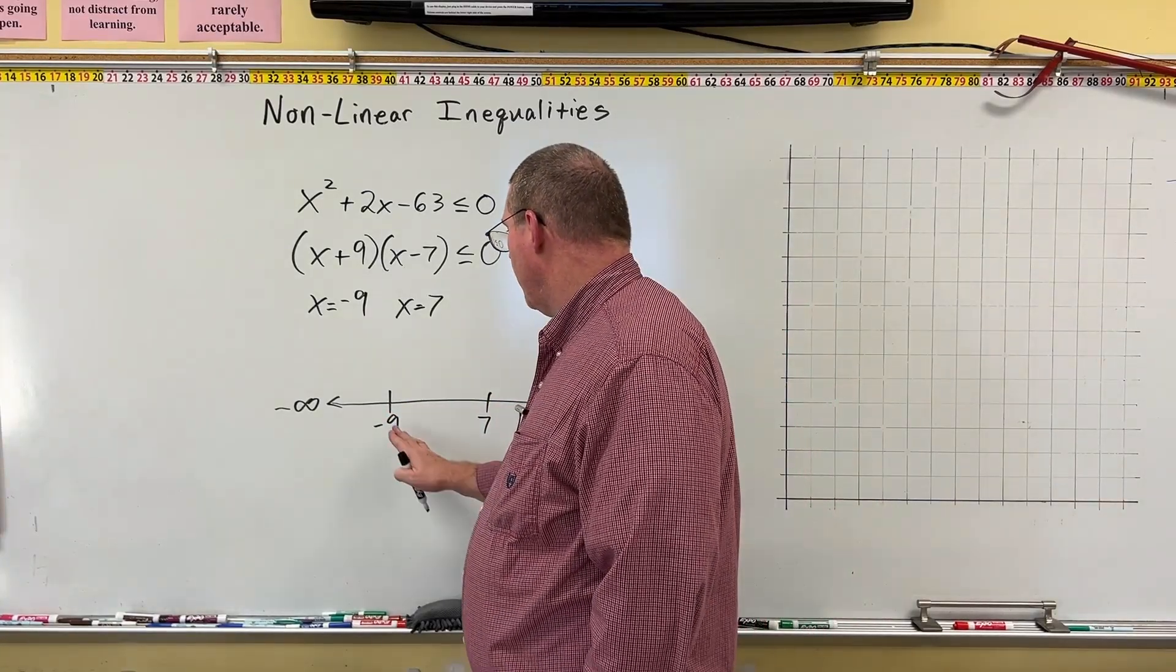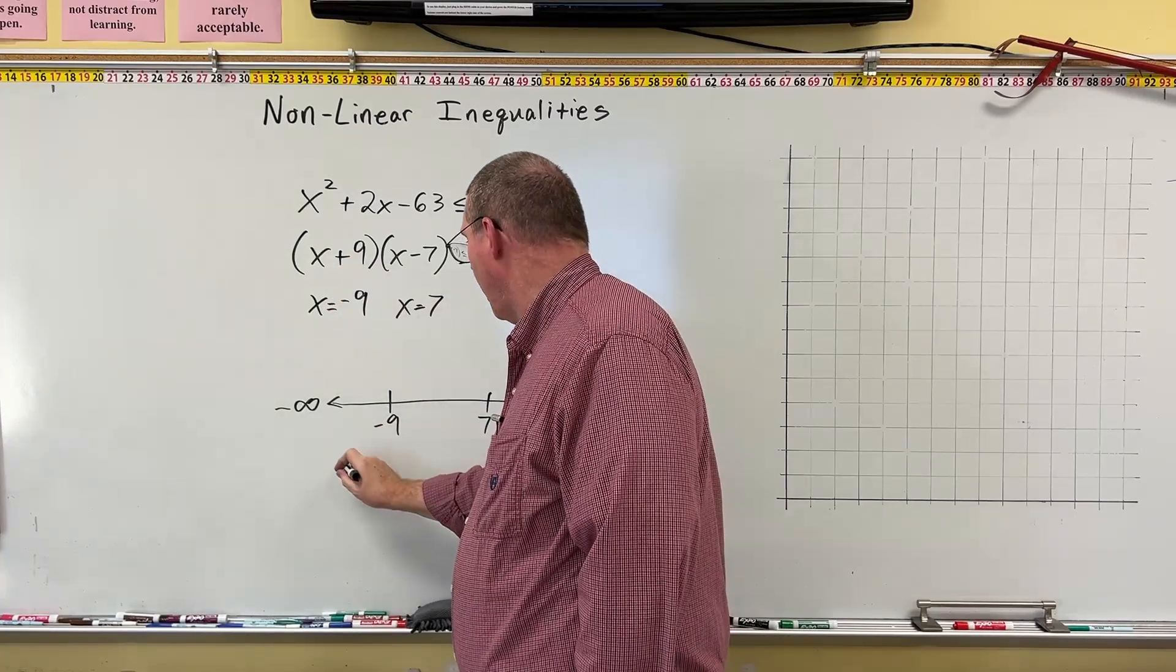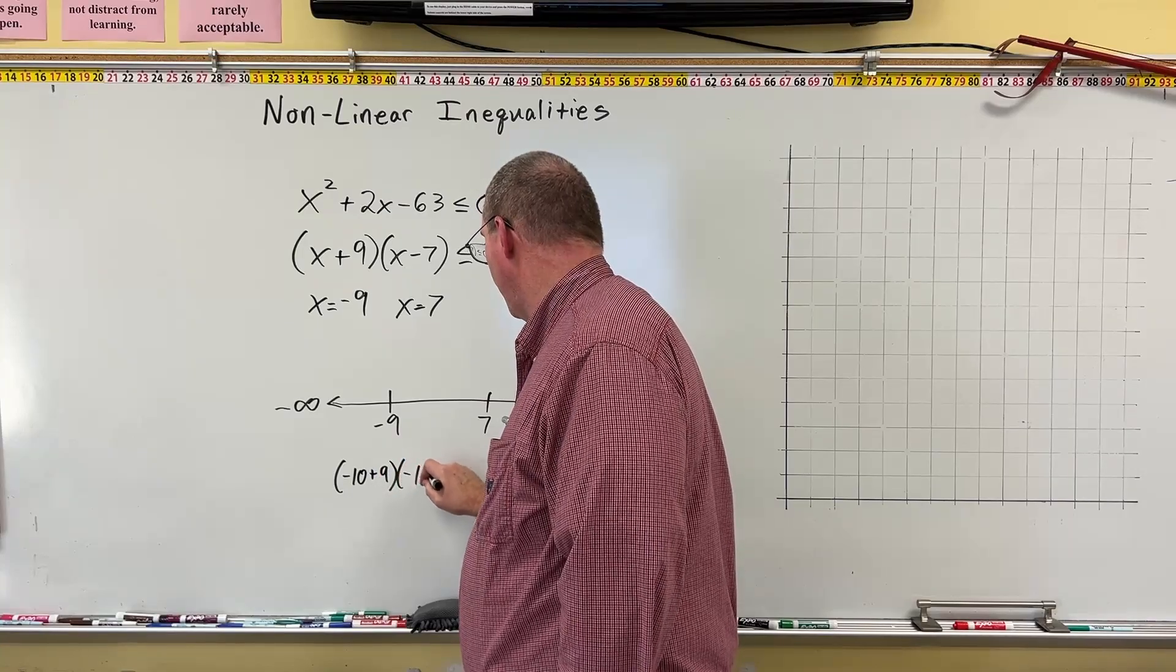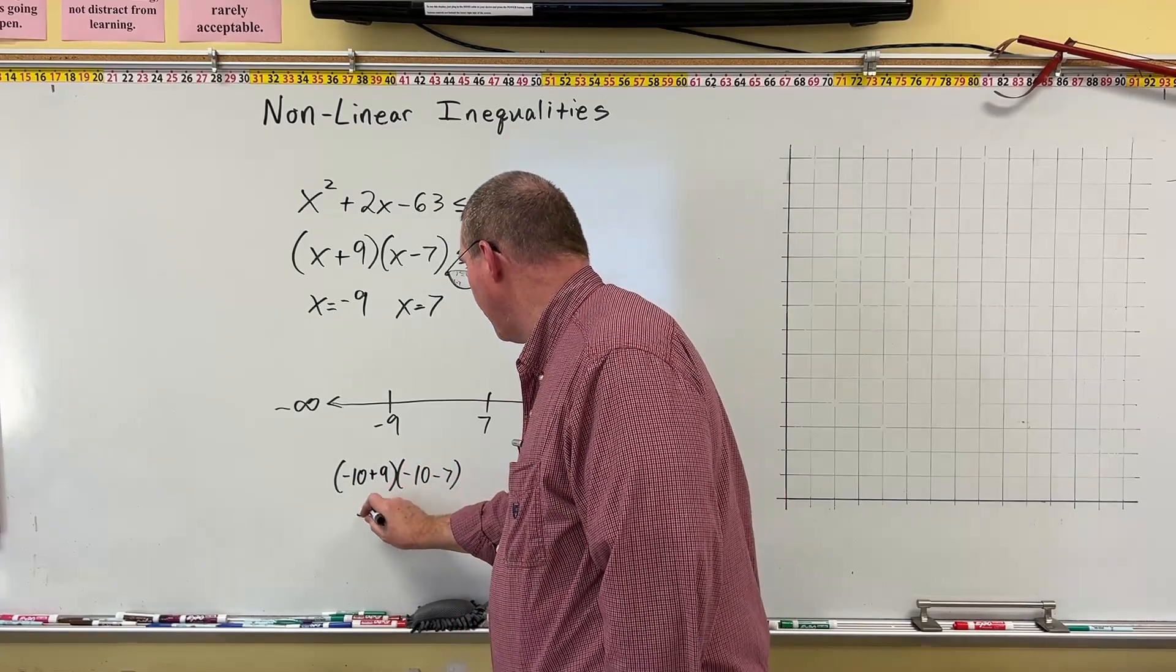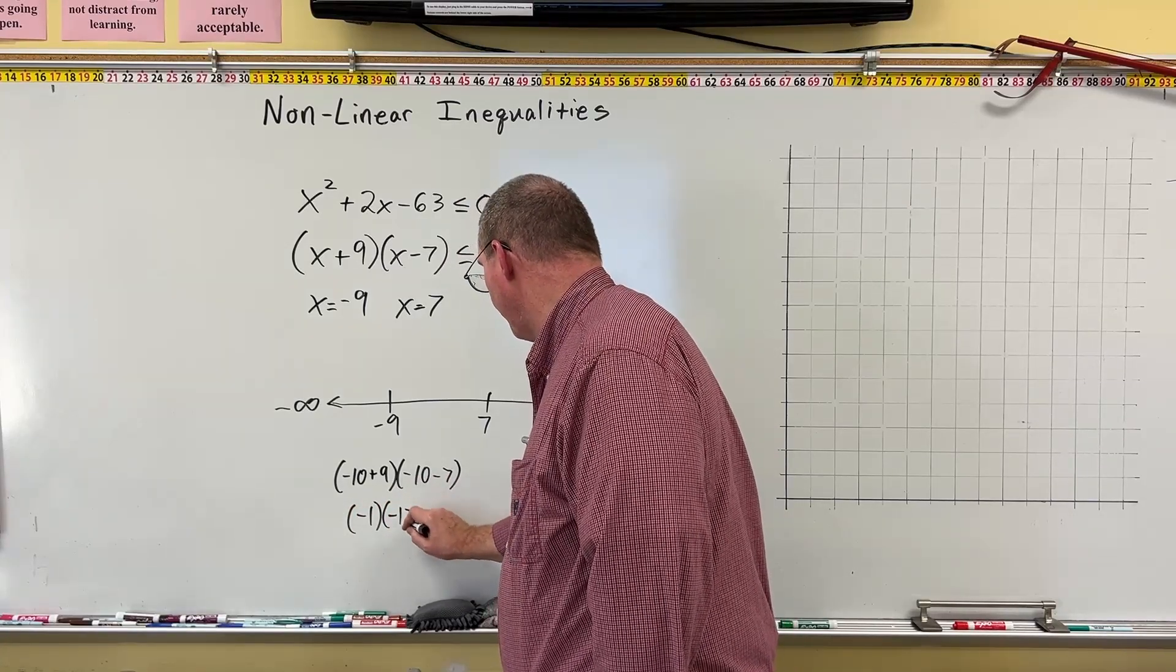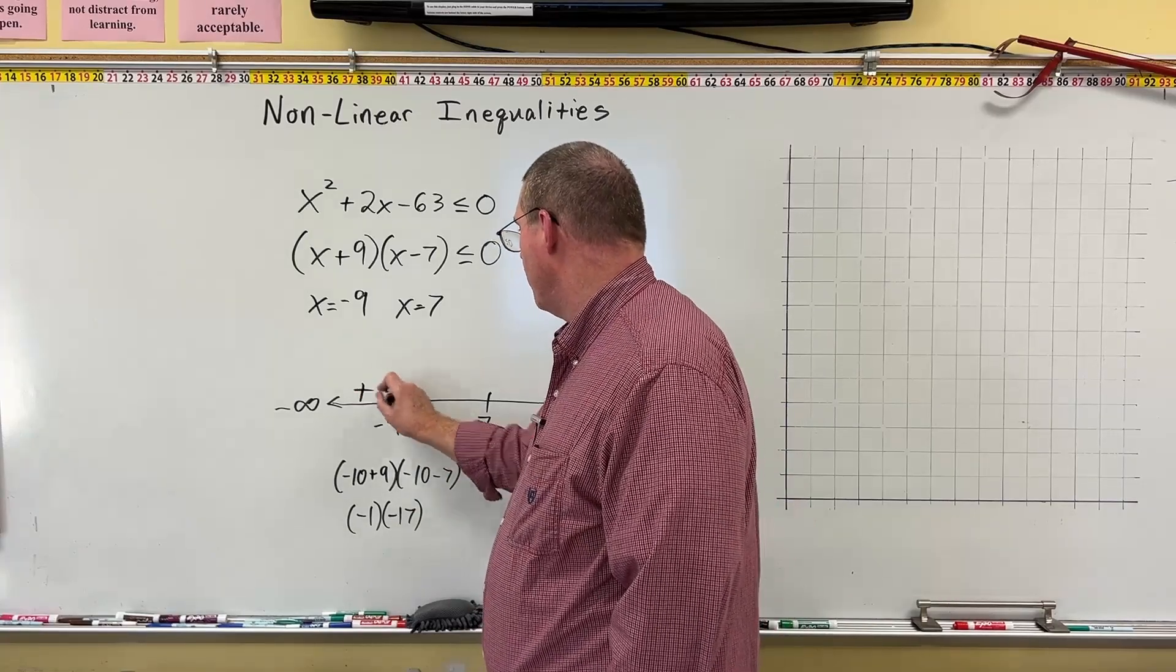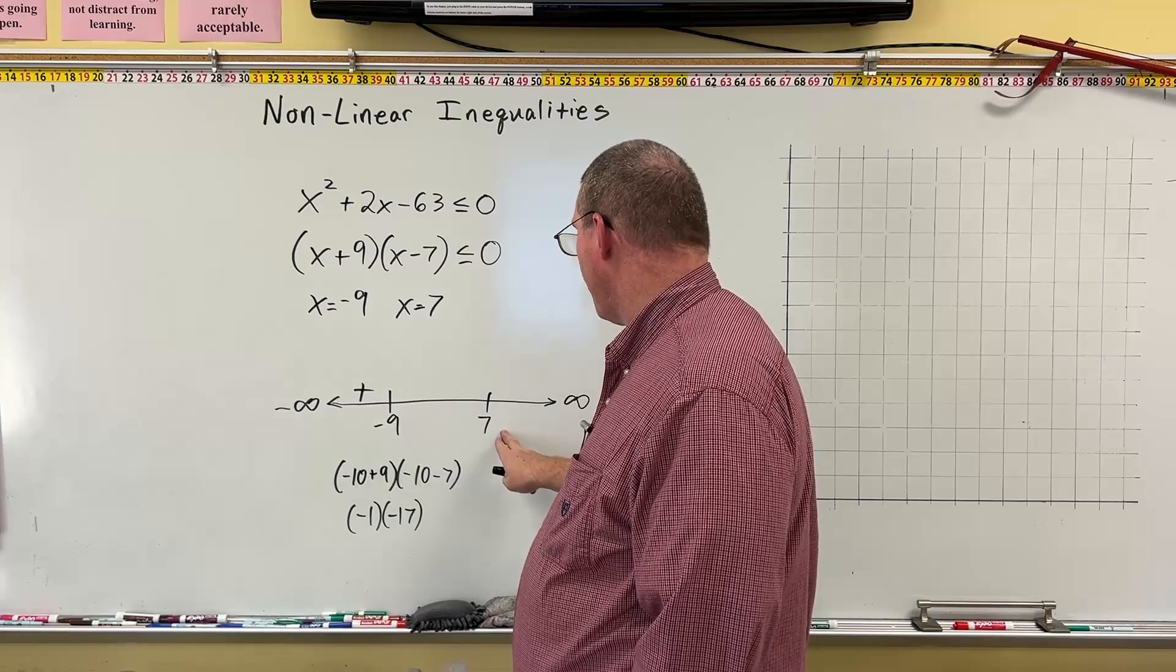We're going to take a number smaller than negative 9, like negative 10. Well, negative 10 plus 9, times negative 10 minus 7. Well, negative 10 plus 9, that's negative 1. And negative 10 minus 7, that's negative 17. And a negative times a negative is a positive, positive 17. So put a plus there.